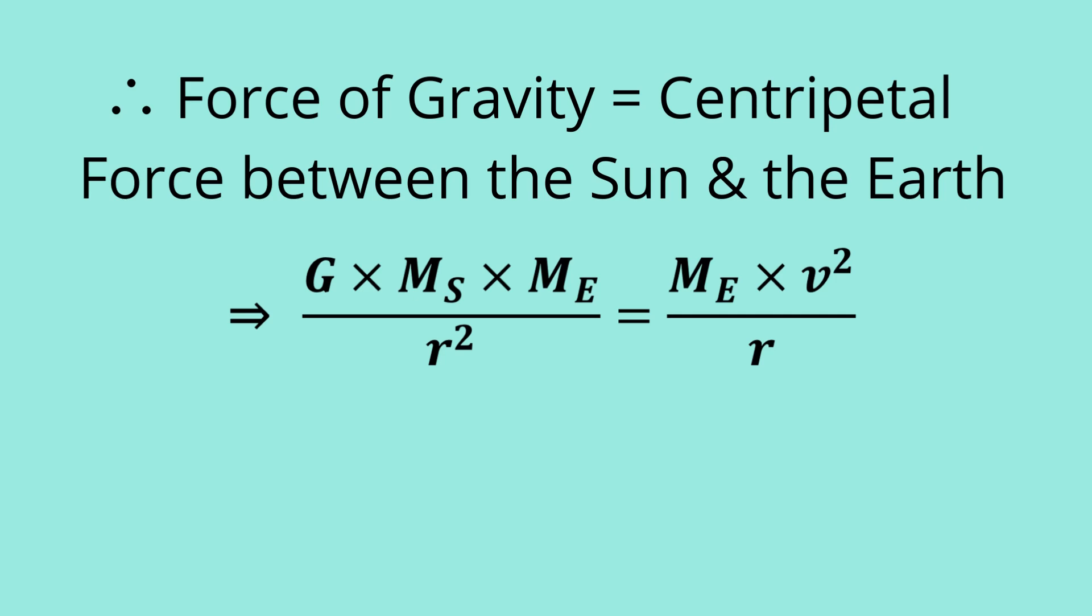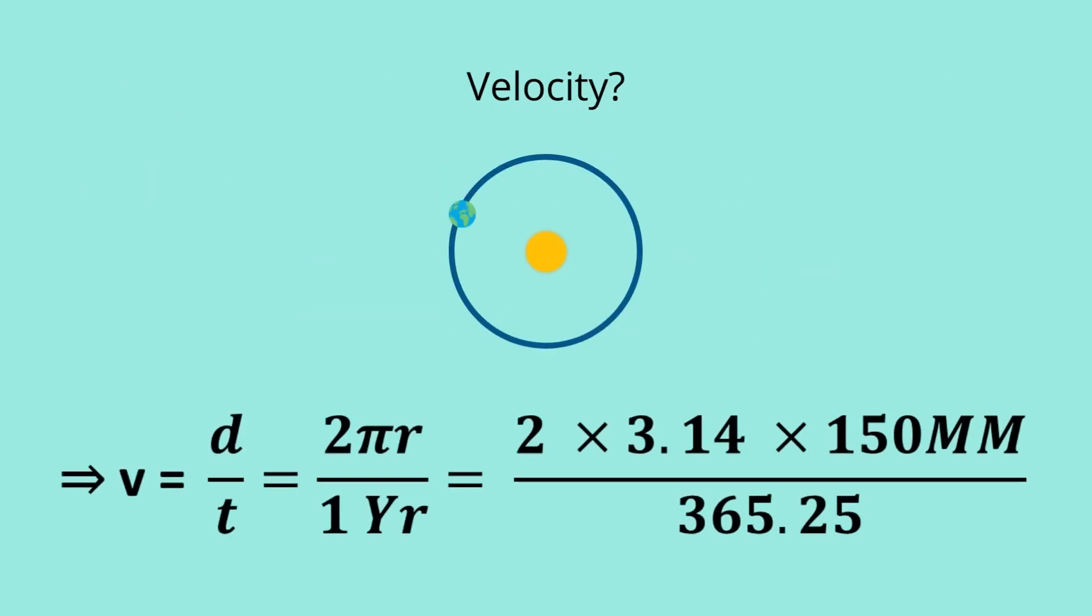G, the gravitational constant valuing at 6.67430 times 10 to the power negative 11 Newton meter squared per kg squared multiplied by the product of the mass of the earth and that of the sun divided by the distance squared, which is equated to the mass of the earth times the velocity squared divided by the radius. What we don't know is the velocity. We know velocity equals distance upon time. Distance is just the circumference here, so 2 pi r. The time is going to be one year, 365.25 days.